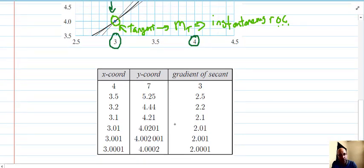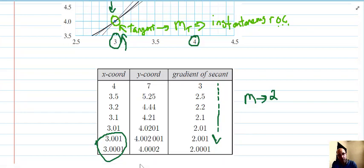By the time it gets to these sort of values here, we're talking about something that's very close to 3, and you can see that that is converging on some value there. It's approaching two, so we say the gradient is approaching two.